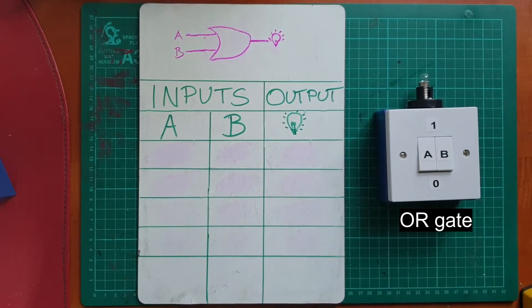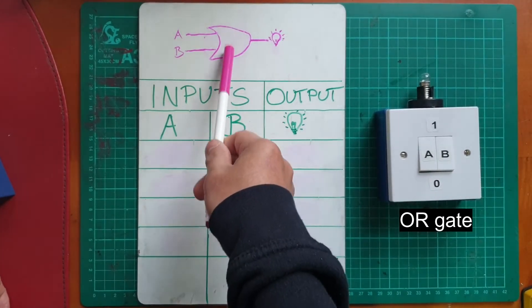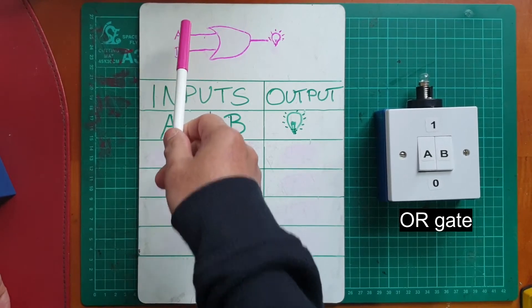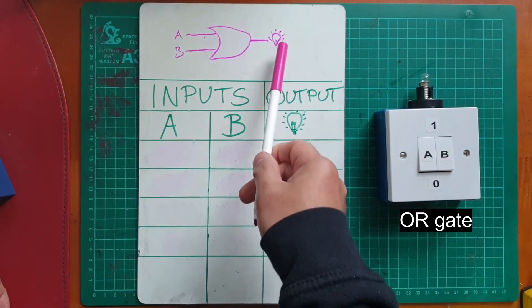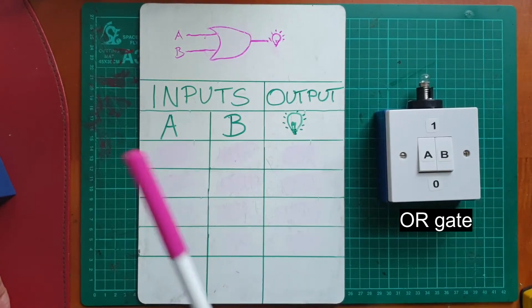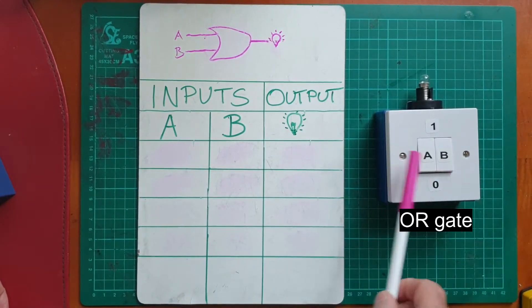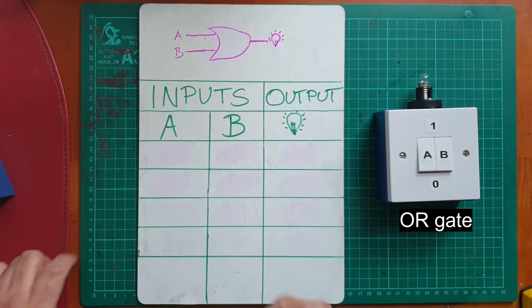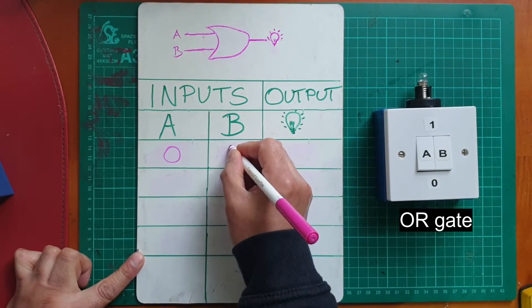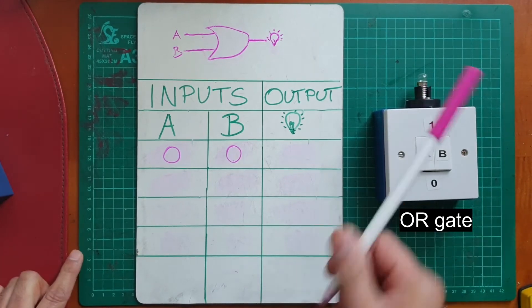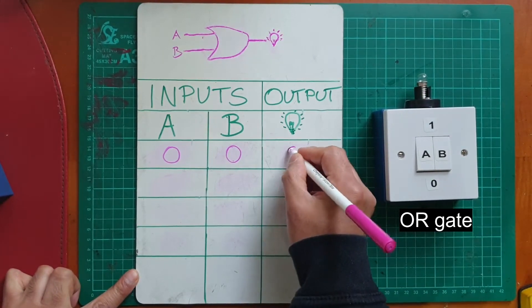Now let's take a look at the OR gate. So this is the symbol for the OR gate. As per the AND gate, two inputs, A and B, and the output again represented by the light bulb. So to begin with, with A and B in the off position, so that's zero zero, the light bulb's off, so we insert a zero.